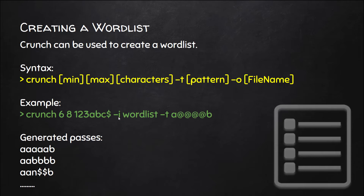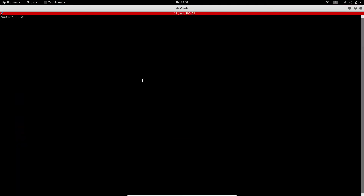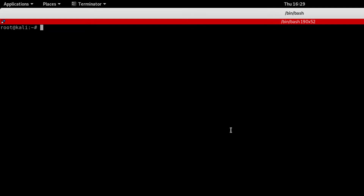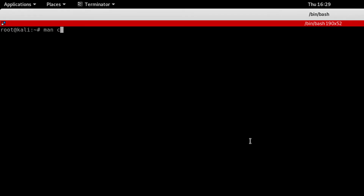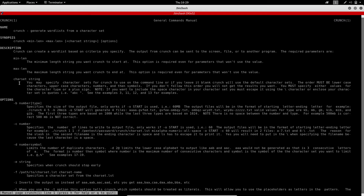Then you use dash-o to specify the output wordlist file, and dash-t to set a pattern. I'll show you this practically. I'm going to open the terminal now. In the terminal, I type 'crunch' and hit enter to see the options.